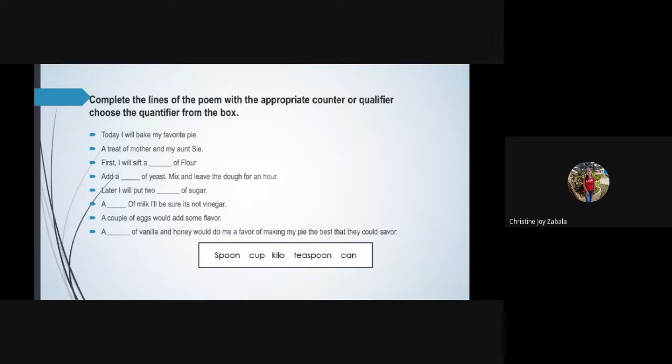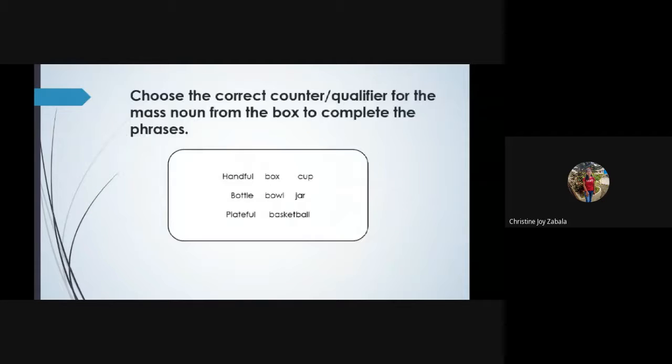And now for your activity, you need to find a pair. Do you have a pair now? One of you go in the front and I'll give the answer sheet to those pairs to answer. You need to choose the correct counter or qualifier for the mass noun from the box to complete the phrases. Are you ready class? I'll give you two minutes. You may start now.